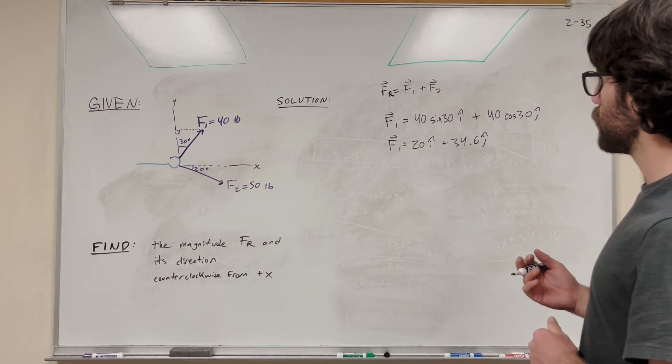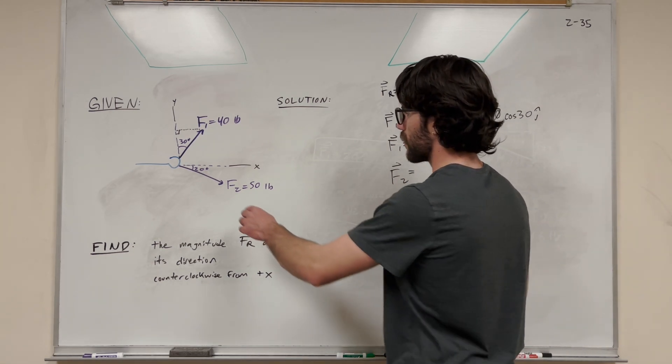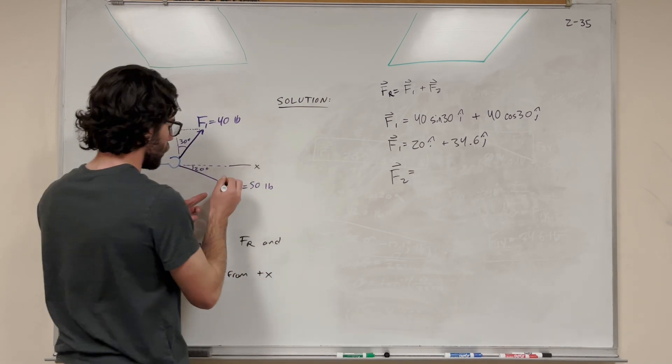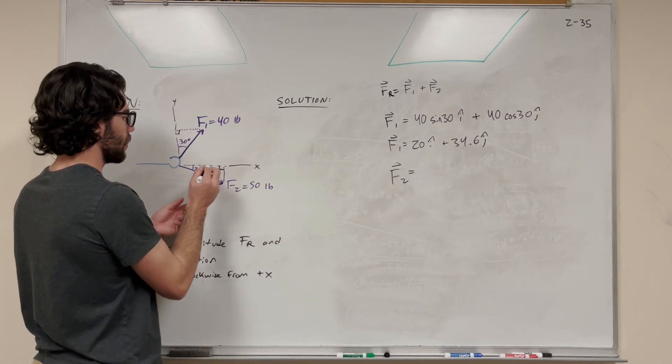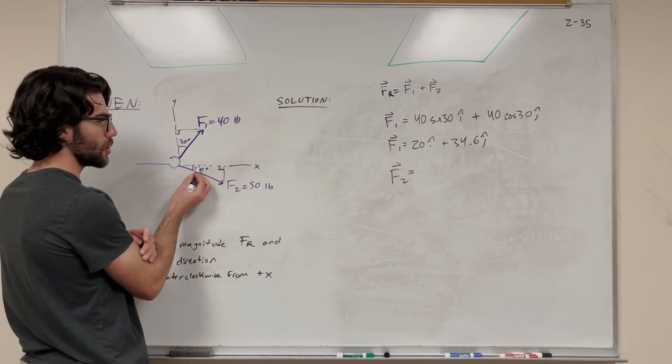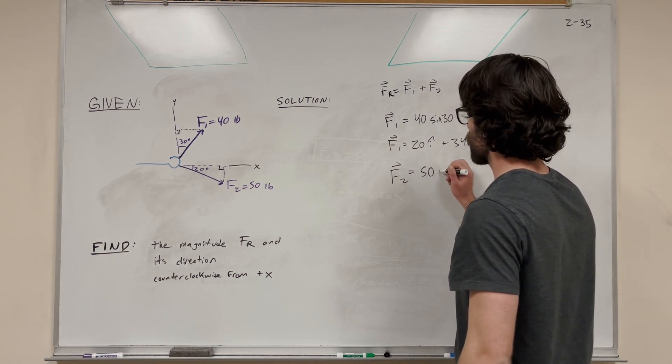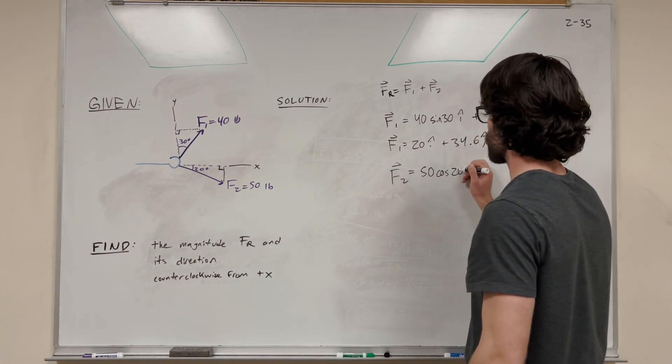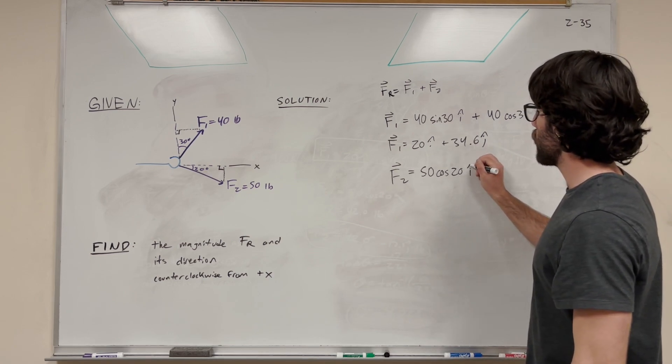So let's do force 2 now. Similar thing. Let's break it down into its triangle. So it's going to look something like this. And here's our right angle. We're looking at the x component first. Our x component is adjacent to the 20 this time. So instead of doing a sine on the x, we're going to do 50 cosine of 20, because cosine is what we use when it's adjacent to the angle. We're going to attach our i to that.